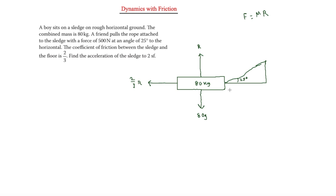Now we need to resolve the 500 N tension. With the 25-degree angle, the vertical component (opposite) gives us 500 sin 25, and the horizontal component (adjacent) gives us 500 cos 25.